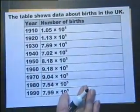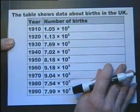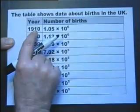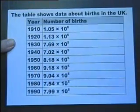Level 8 Key Stage 3 Exam Type Questions. The table shows data about births in the United Kingdom. So in 1910 this many births, 1960 this many births.